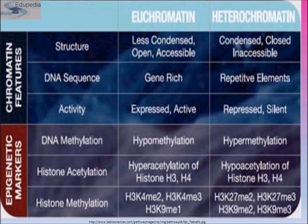Histone methylation refers to the addition of the methyl group to the histone proteins. For example, in euchromatin, histone H3 at its K4 position can have two methyl groups attached — this is known as histone methylation (H3K4me2). Similarly, three methyl groups can attach to H3K4 (H3K4me3). On the contrary, in heterochromatin, different histone methylation patterns form as the epigenetic markers, such as H3K9 methylation.